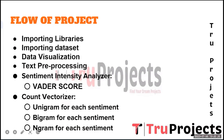The next step is the count vectorizer. The count vectorizer is a text preprocessing technique that converts text data into numerical vectors. It represents each review as a bag of words, counting the frequency of each word. We use the count vectorizer to transform the preprocessed text data into a numerical format, which is essential for training the machine learning model.